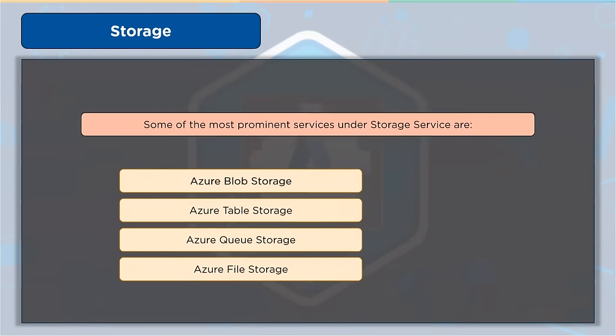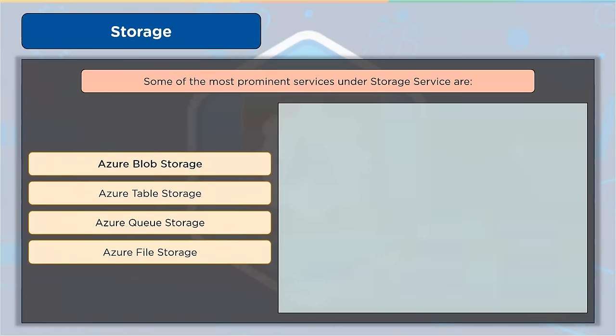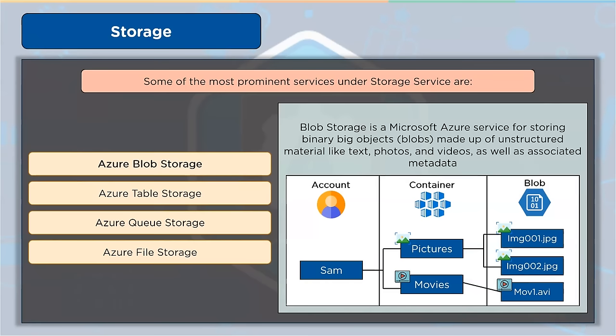Azure Blob Storage is a Microsoft Azure service for storing binary large objects made up of unstructured material like text, photos, and videos, as well as associated metadata. Blob Storage objects can be accessed through HTTP or HTTPS from anywhere in the globe. They can be accessed using the Azure Storage REST API, Azure PowerShell, and Azure CLI, or a client library for Azure Storage.